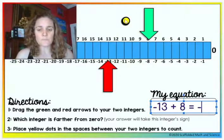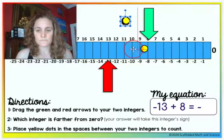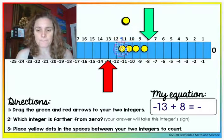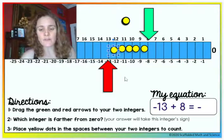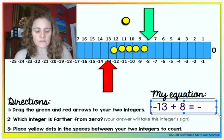And then we'll place yellow dots in the spaces between the two. So five yellow dots fit in the spaces between negative 13 and 8, so our answer is negative 5.